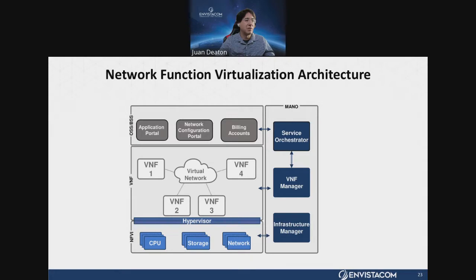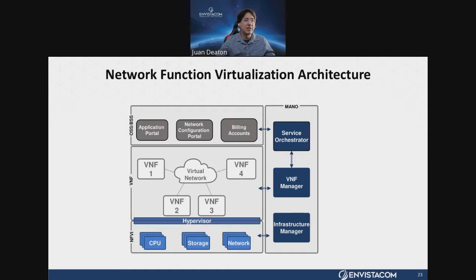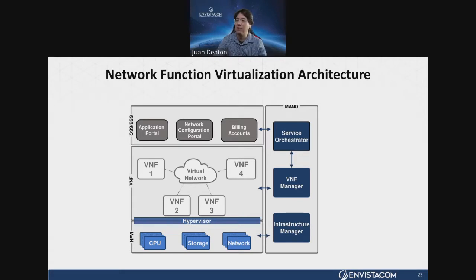Here is a simplified version of what the network function virtualization architecture looks like. At the very bottom is the NFVI infrastructure layer — all the computing resources provided, with the hypervisor providing virtualization of those. The virtual network function layer above is where individual virtual machines are connected together. Above that are the OSS/BSS systems — business components and representative functions that allow a network operator to run these virtualized systems, including application portals for customers to order services. The MANO system — management network and orchestration — has the responsibility for deploying, configuring, and terminating different virtual network functions.